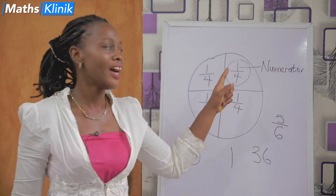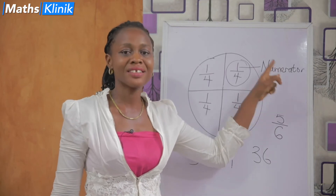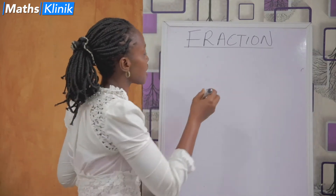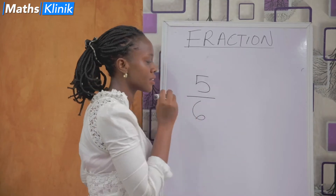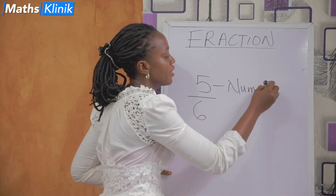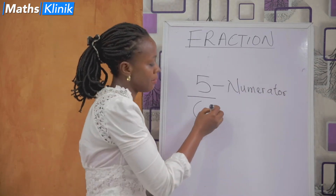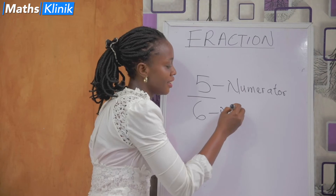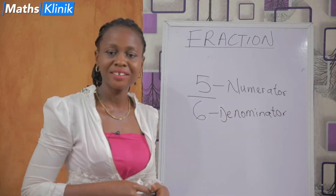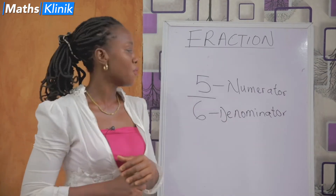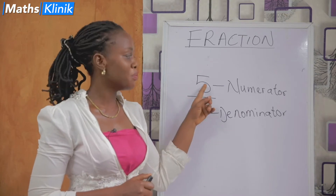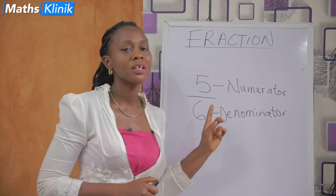Can you say that, everyone? Numerator. Let's have a clear board. I'm going to use another example: five up over six. I said the number up is called numerator, while the number down is called denominator. A fraction has two parts — one number up and another number down. The number up is called numerator, while the number down is called denominator.